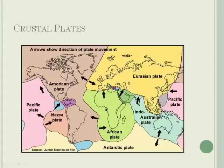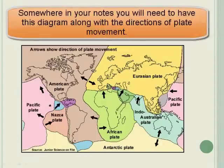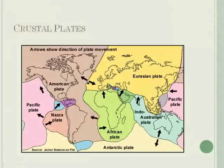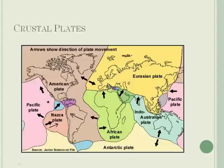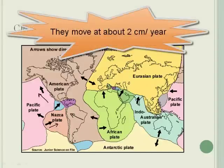Now, the actual physical plates on the Earth — these are the main plates. You should print this out or copy it down, because you need to know the different plates and their rough directions. The Nazca plate is moving to the east and colliding with the American plate, which is moving to the northwest — that's what creates mountains. The Pacific plate is also moving, and the plates don't all move at the same rates. Plates move at an average of about two centimeters per year, which is not particularly fast, but they still move.